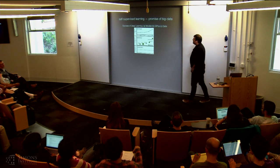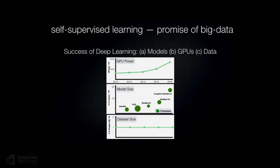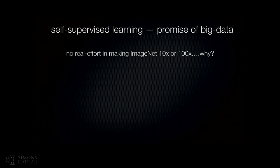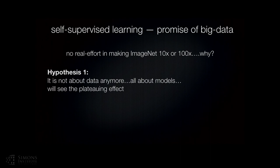The last work is a teaser of something coming to arXiv soon. All this success of deep learning is based on models, GPUs, and data. Both GPUs and models have grown substantially, but data doesn't seem to be growing at all, especially in vision. Why is there no real effort to make ImageNet 10x or 100x larger? There are two hypotheses: first, that we believe it's not about data anymore — it's all about models — and scaling to two million images gives only 1% gain. Second, that it's not about general representation anymore, but task-specific data collection.